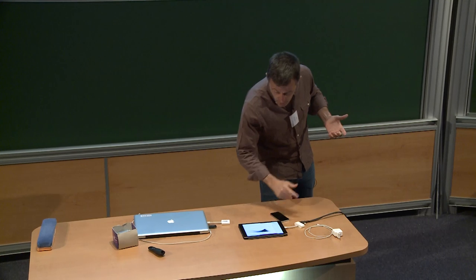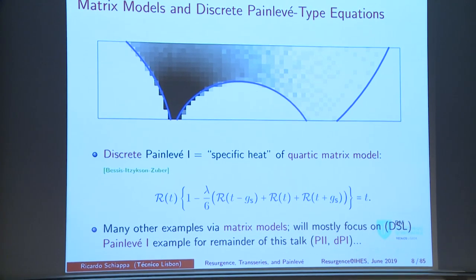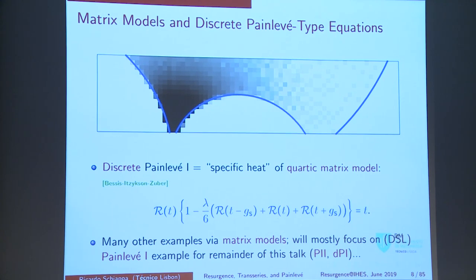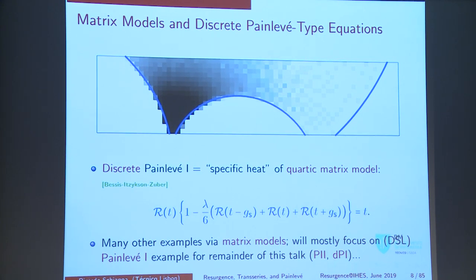This holds not only for these Painlevé solutions but also for the classical Painlevé equations, and also for discrete Painlevé. This comes from a matrix model — the discrete version of the Painlevé equation — where R now replaces U. It's the specific heat of a matrix model. Those are also double poles of this discrete Painlevé R.